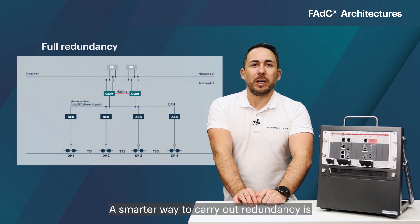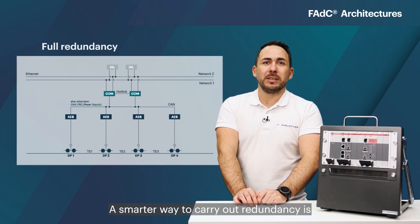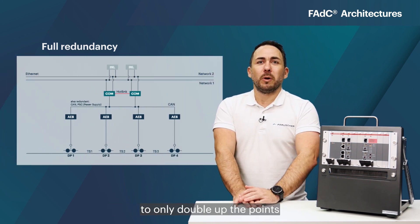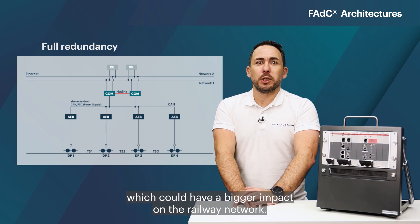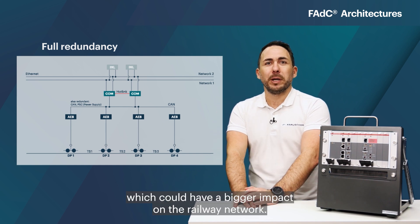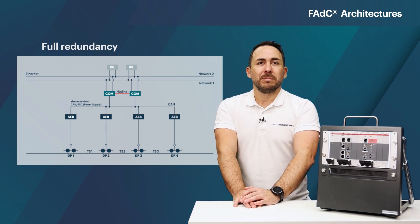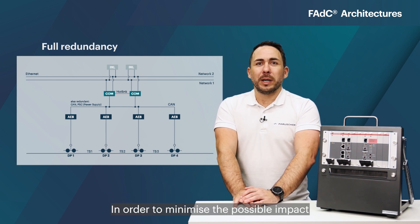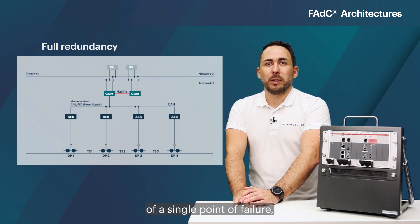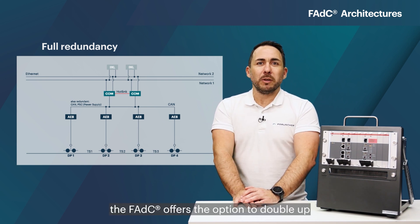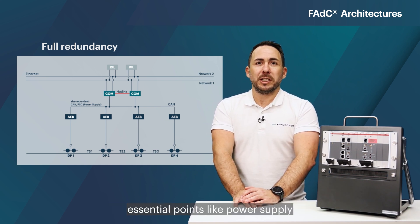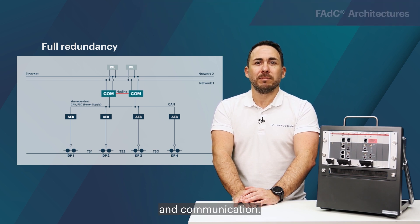A smarter way to carry out redundancy is to only double up the points which could have a bigger impact on the railway network. In order to minimize the possible impact of a single point of failure, the FADC offers the option to double up essential points like power supply and communication.